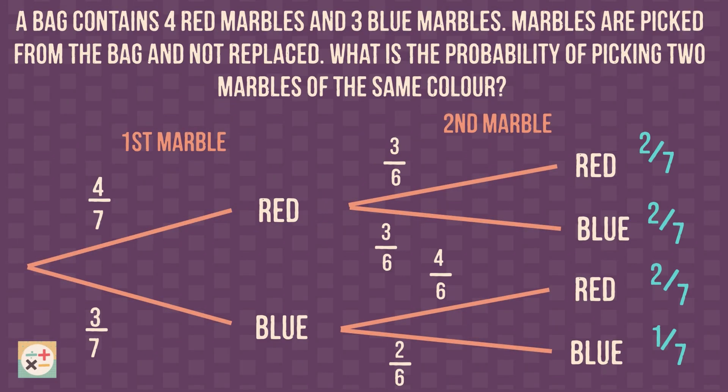Notice that the probabilities for the second marble are different to the first. This is because the marbles are not replaced after being picked from the bag. These are called conditional probabilities, as the circumstances can vary in the second event. In this case, if a red marble is taken from the bag in the first event, it is not available in the second event. However, if a red marble is not taken in the first event, it will be available in the second event. This changes the probabilities in the second event.